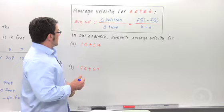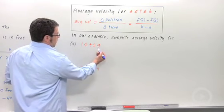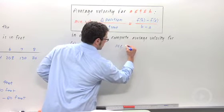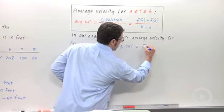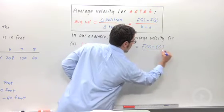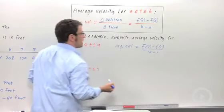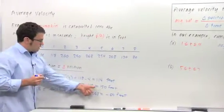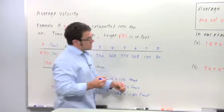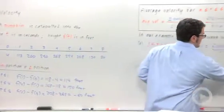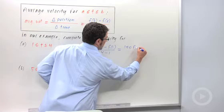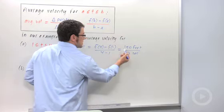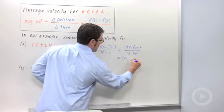Let's compute some average velocities. First, for the interval from 1 to 4, we would have average velocity is f of 4 minus f of 1 over 4 minus 1. Now we already calculated f of 4 minus f of 1. It's back here. 150 feet. So this would be, on top, 150 feet, and on bottom, 3 seconds. So this is going to be 50 feet per second.